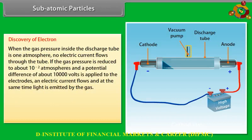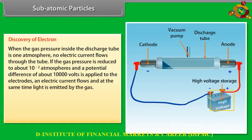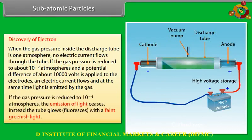When the gas pressure inside the discharge tube is 1 atmosphere, no electric current flows through the tube. If the gas pressure is reduced to about 10⁻² atmospheres and a potential difference of about 10,000 volts is applied to the electrodes, electric current flows and light is emitted by the gas. If the gas pressure is reduced to 10⁻⁴ atmospheres, the emission of light ceases.